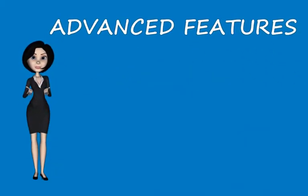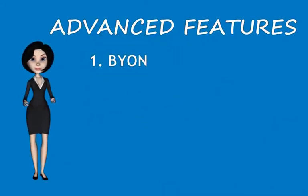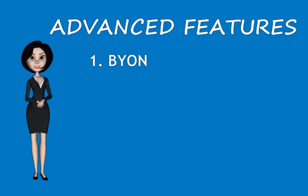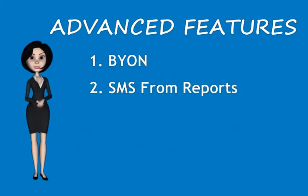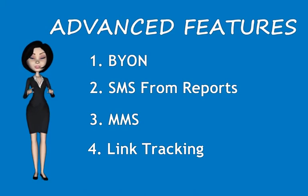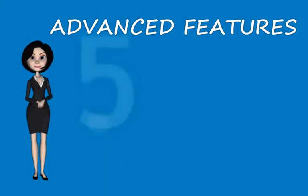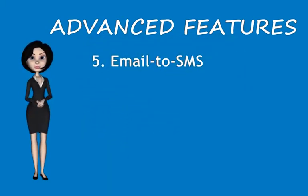Also take advantage of advanced features like Bring Your Own Number. One of the most advanced capabilities of 360 SMS app is to text-enable an existing landline number, making it incredibly easy for customers to text and call your brand on the same number. Apart from that, send text messages directly from your Salesforce reports, send and receive multimedia messages, and track if someone has clicked on a link sent in your text messages.